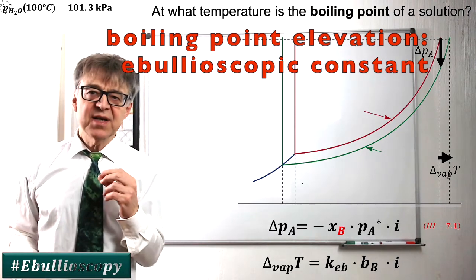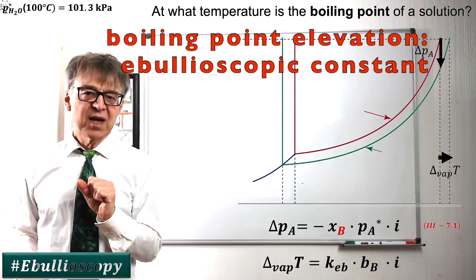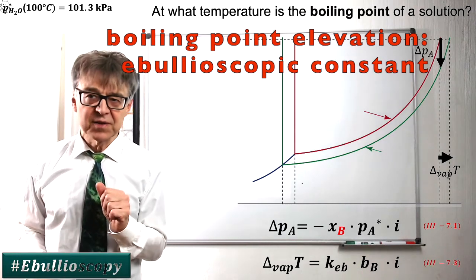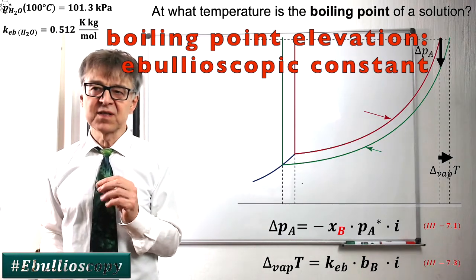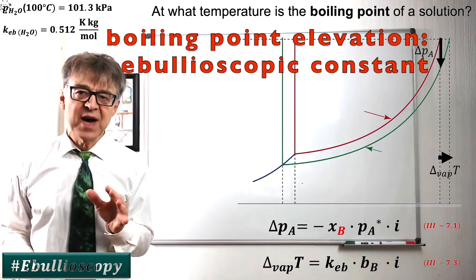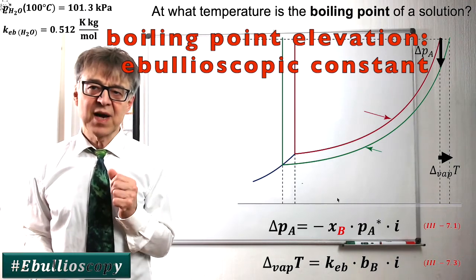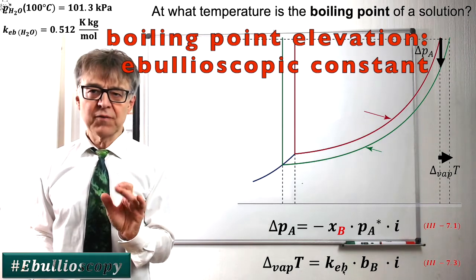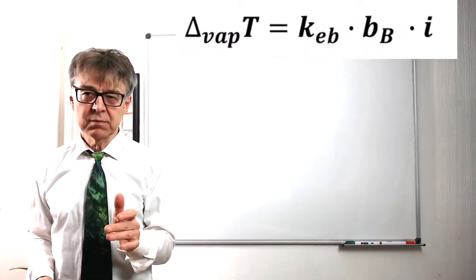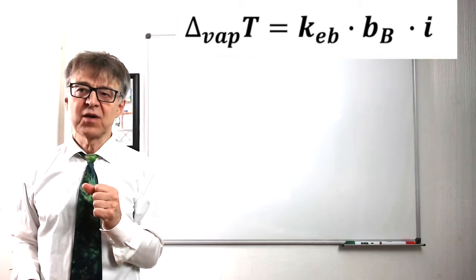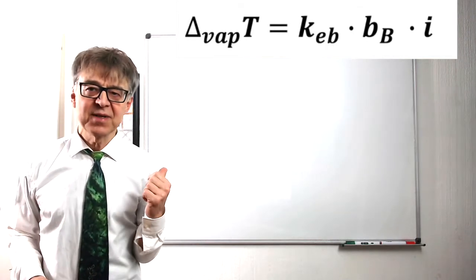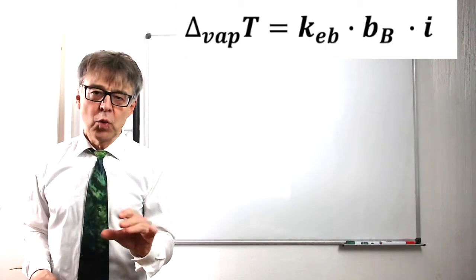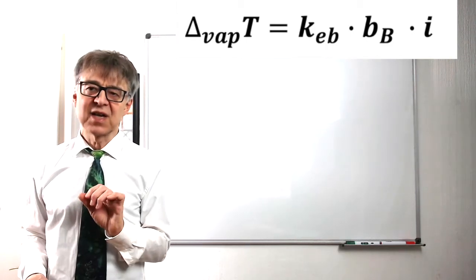K sub Eb is the ebullioscopic constant, a characteristic of every solvent. For water, this constant is approximately 0.5 kg per mole. This means that any solution of osmolality 1, like the sugar or salt solutions in our examples, will have a boiling point of 100.5 degrees centigrade.